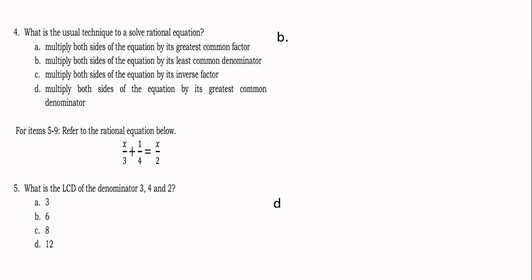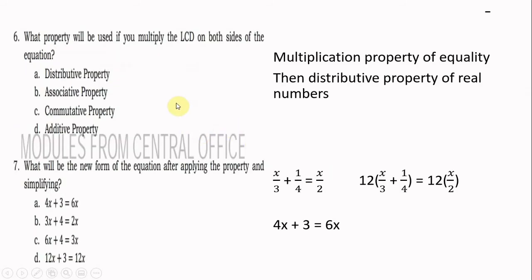The answer is letter D. The LCD is 12, because the least common multiple of 3, 4, and 2 is 12. Counting by 3, counting by 4, and counting by 2 — the least common multiple of these three numbers is 12, so our LCD is 12.